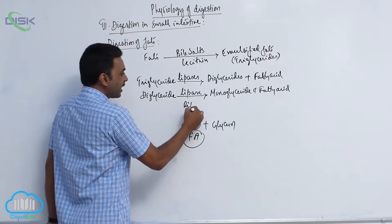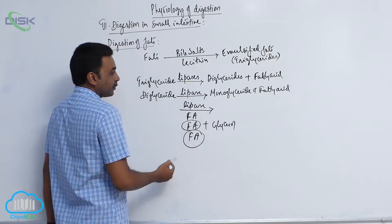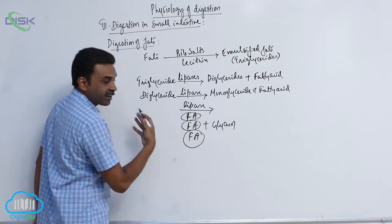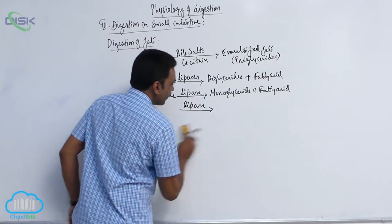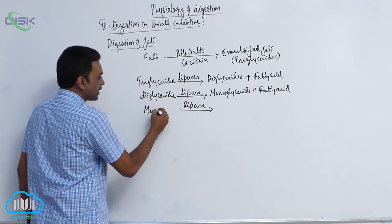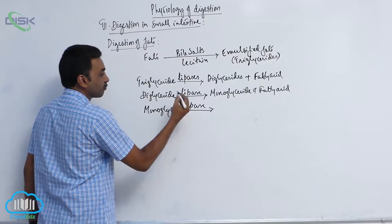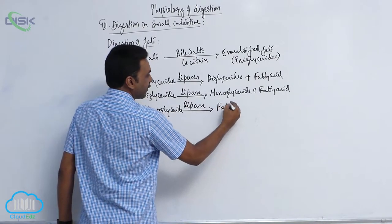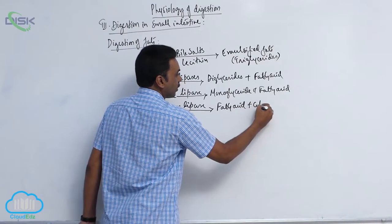Lipases again act on the monoglycerides, separating the remaining fatty acid, producing fatty acid plus glycerol.